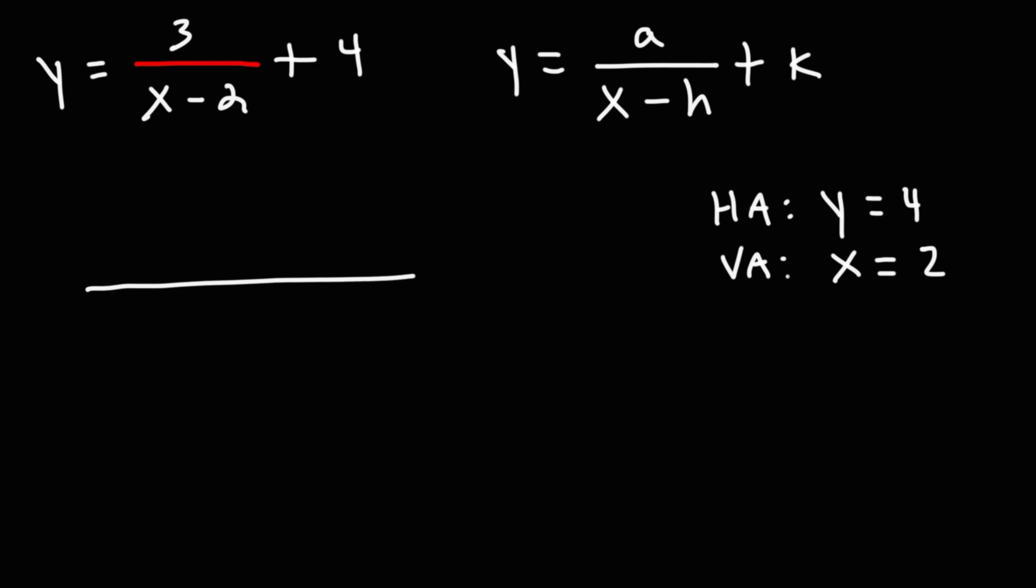So with this information, we can draw a rough sketch of this graph. So at x equals 2, we have a vertical asymptote. And at y equals 4, we have a horizontal asymptote.